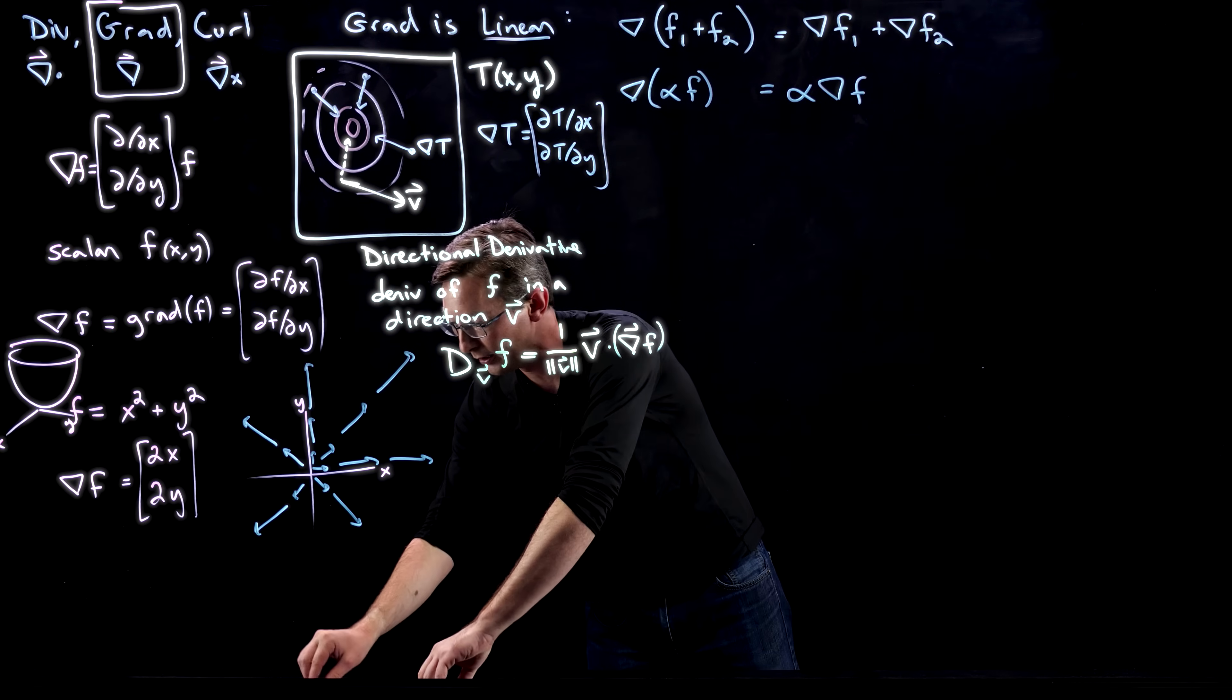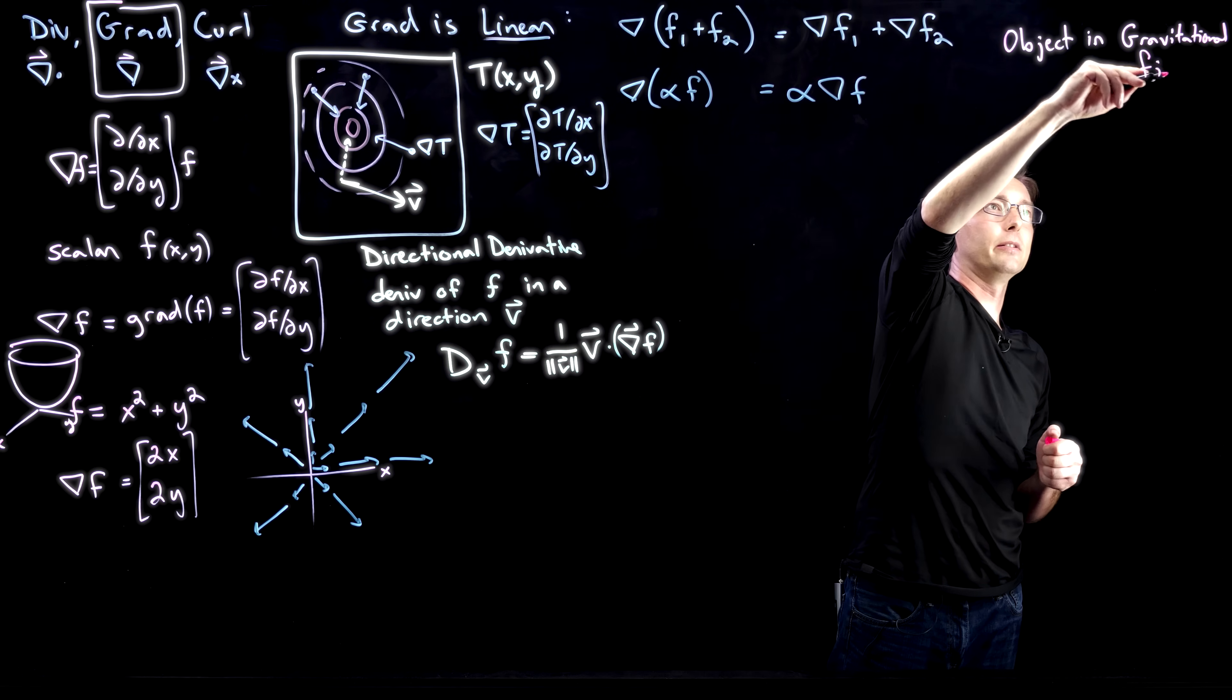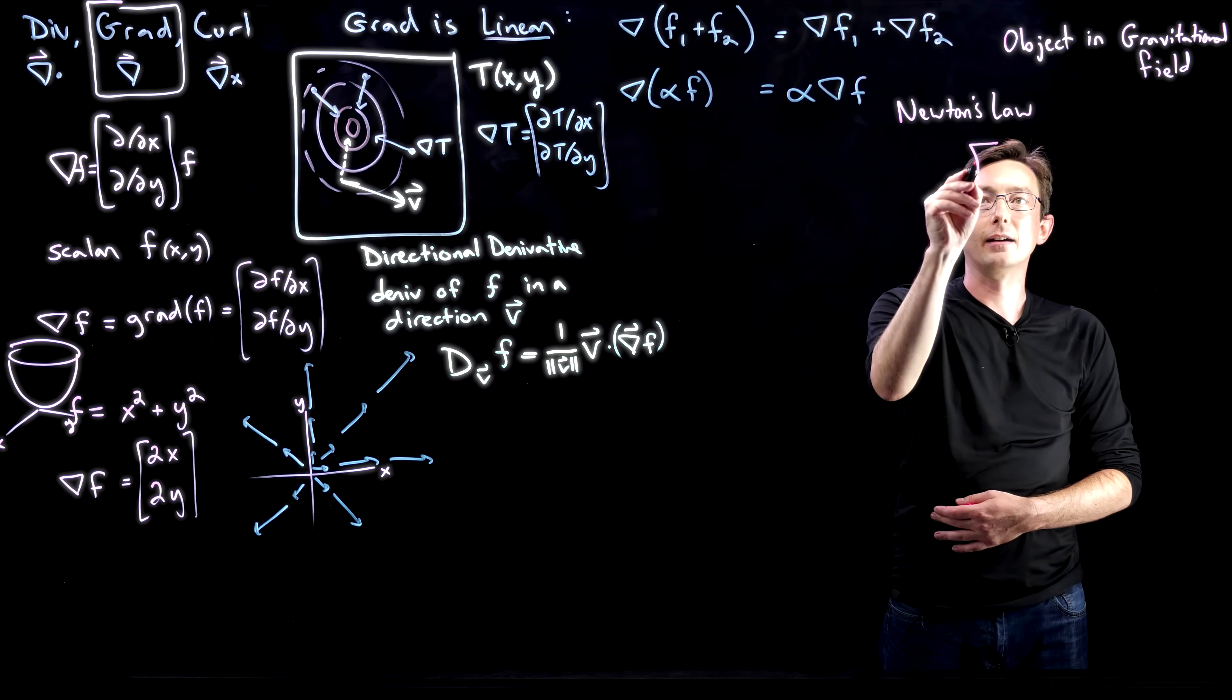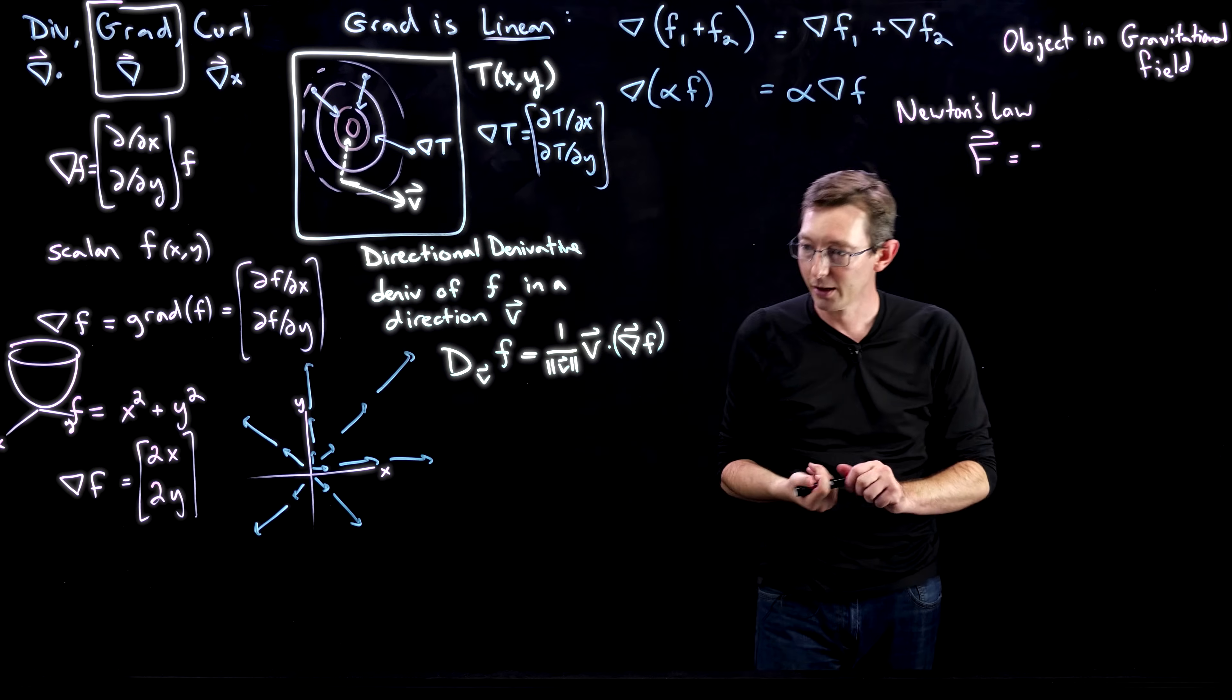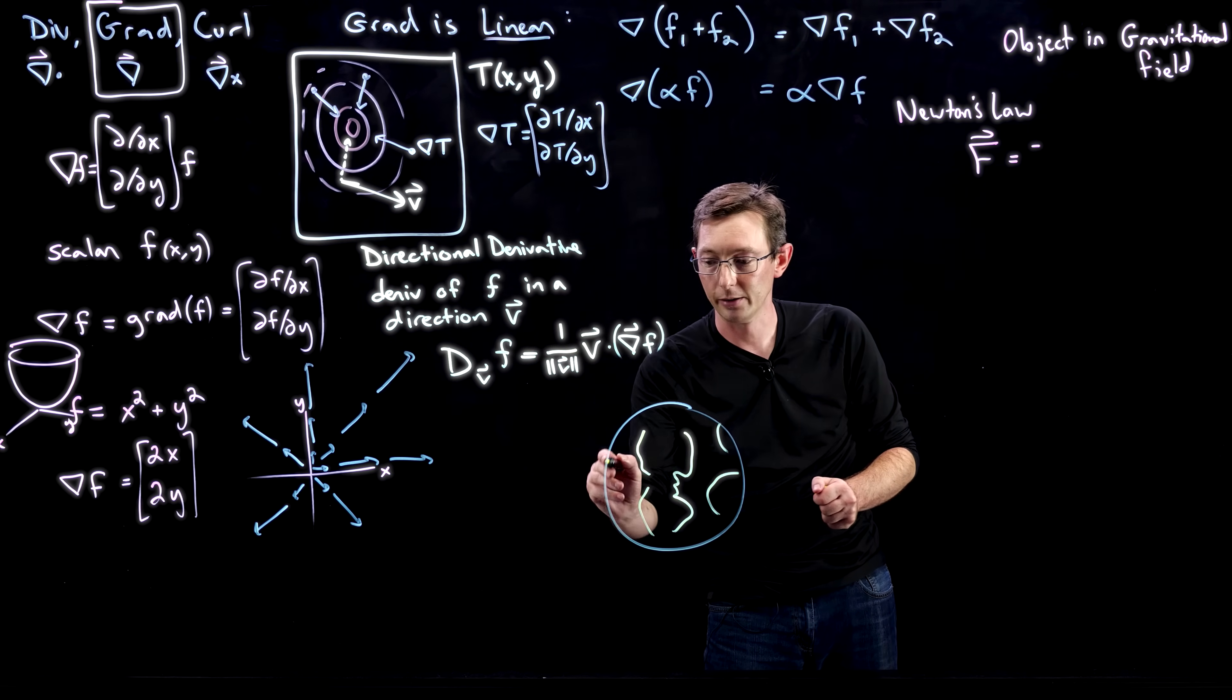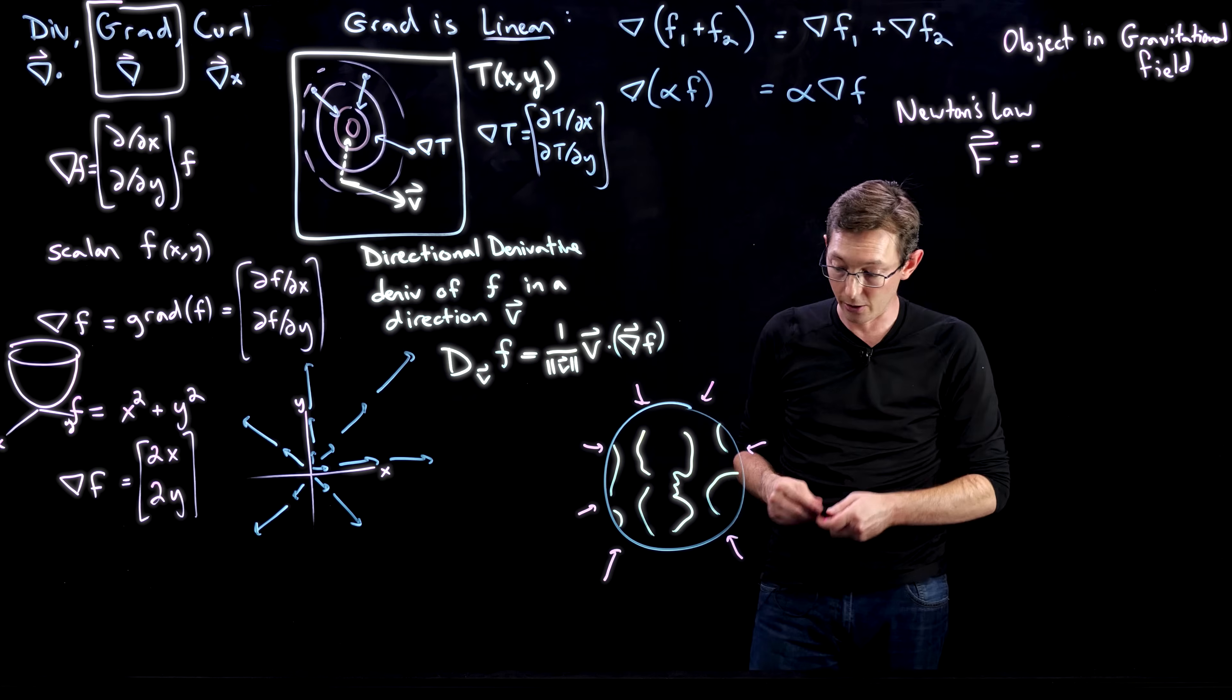Another example of the gradient beyond the temperature distribution is gravitational potentials. Another application is an object in a gravitational field. We have Newton's law of gravity. The force—remember, force has a direction, it's a vector—if I have planet Earth, let me draw this. We've got some continents over here. Earth has a gravitational field, right?